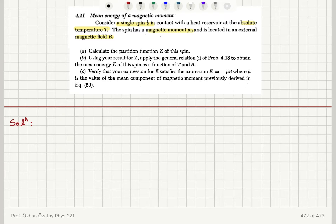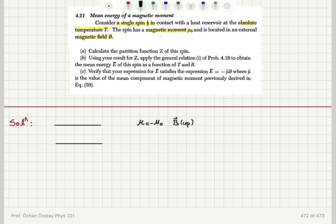Calculate the partition function of this spin. For a single spin there are two possible values of the magnetic moment and corresponding energy levels. If the magnetic moment is minus μ₀ and the magnetic field B is pointing up (plus B), the energy E₋, since energy is minus μ dot B, would be plus μ₀B.